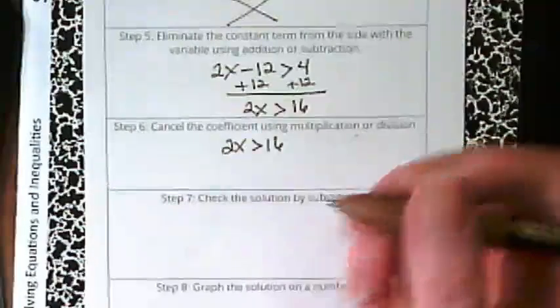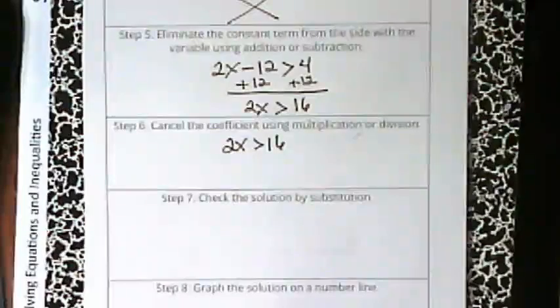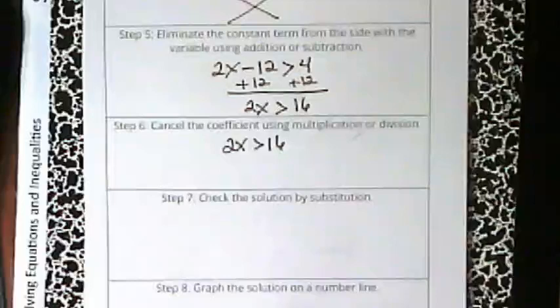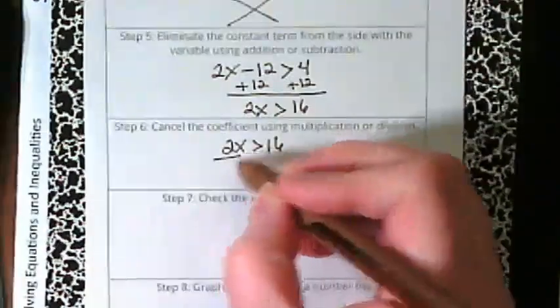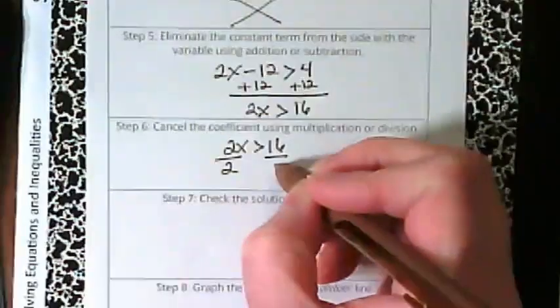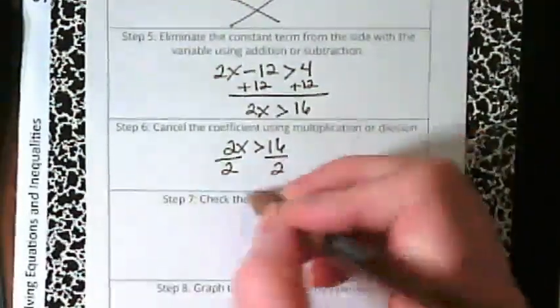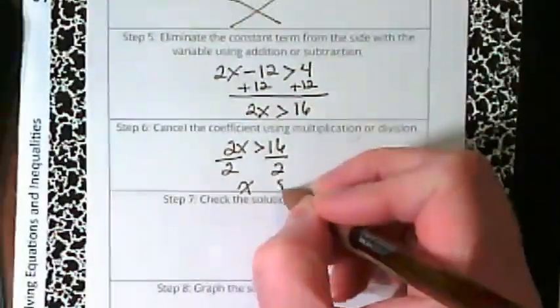Step 6 is cancel the coefficient using multiplication or division. By canceling it, we're finding that invisible 1. And what are we going to use? We're going to divide by 2. 2 over 2 is going to give us that invisible 1. 16 divided by 2 is going to give us 8.